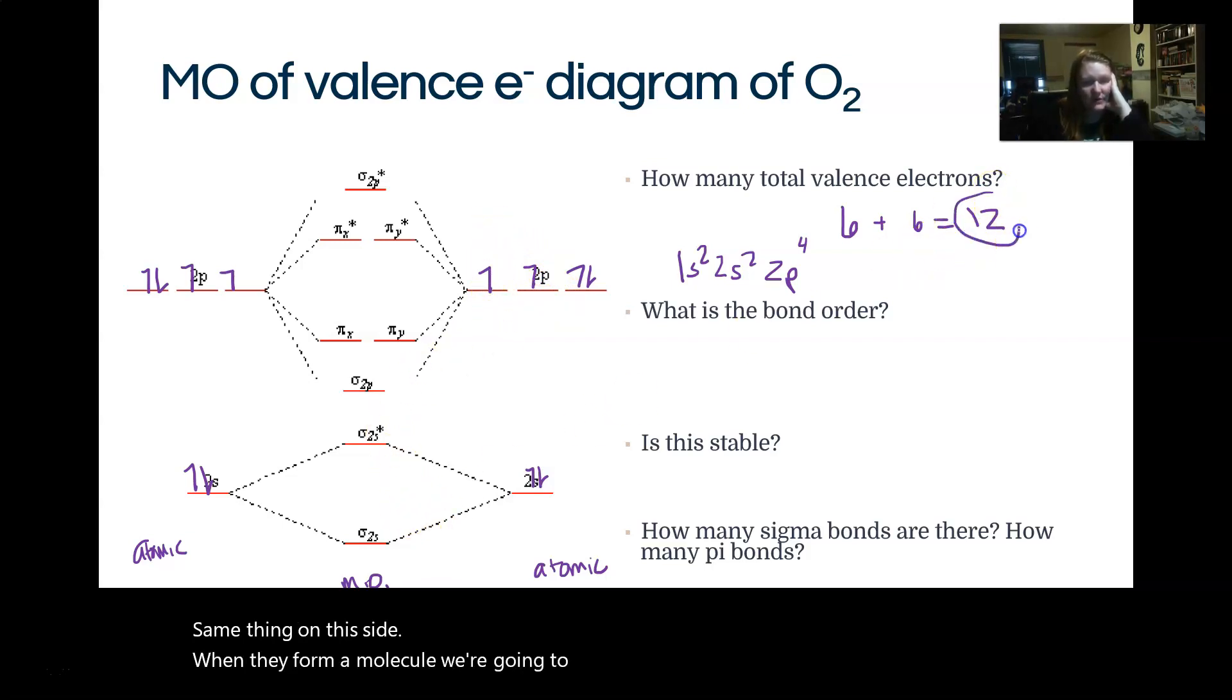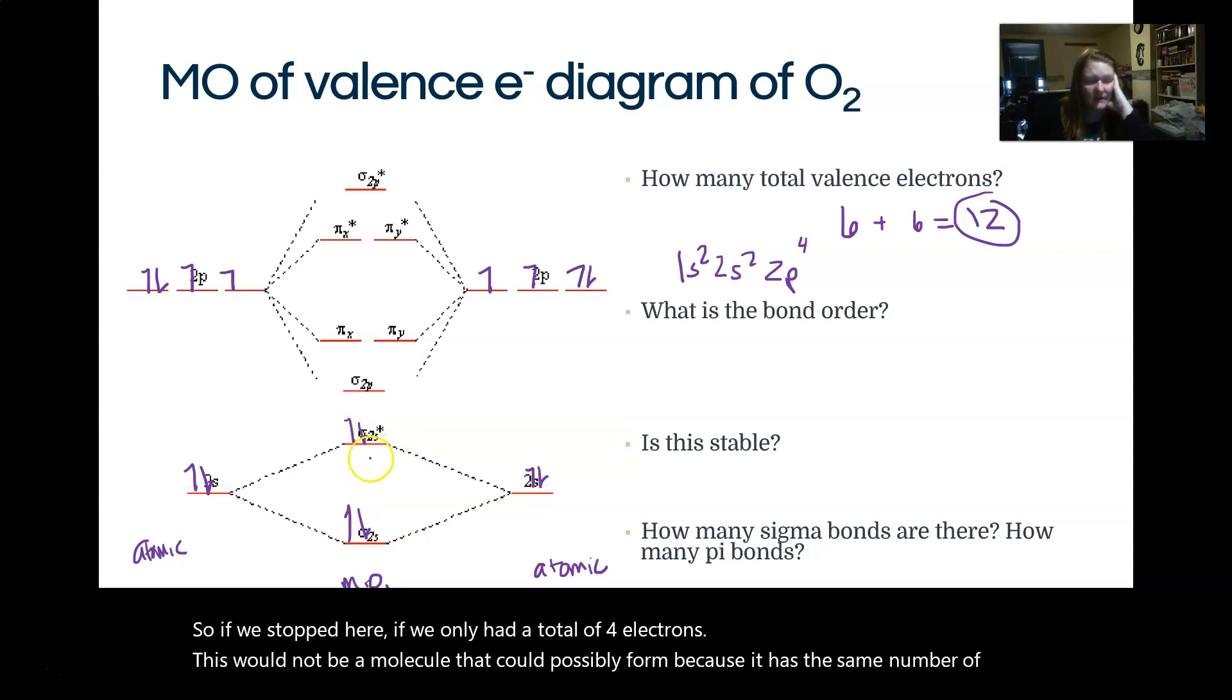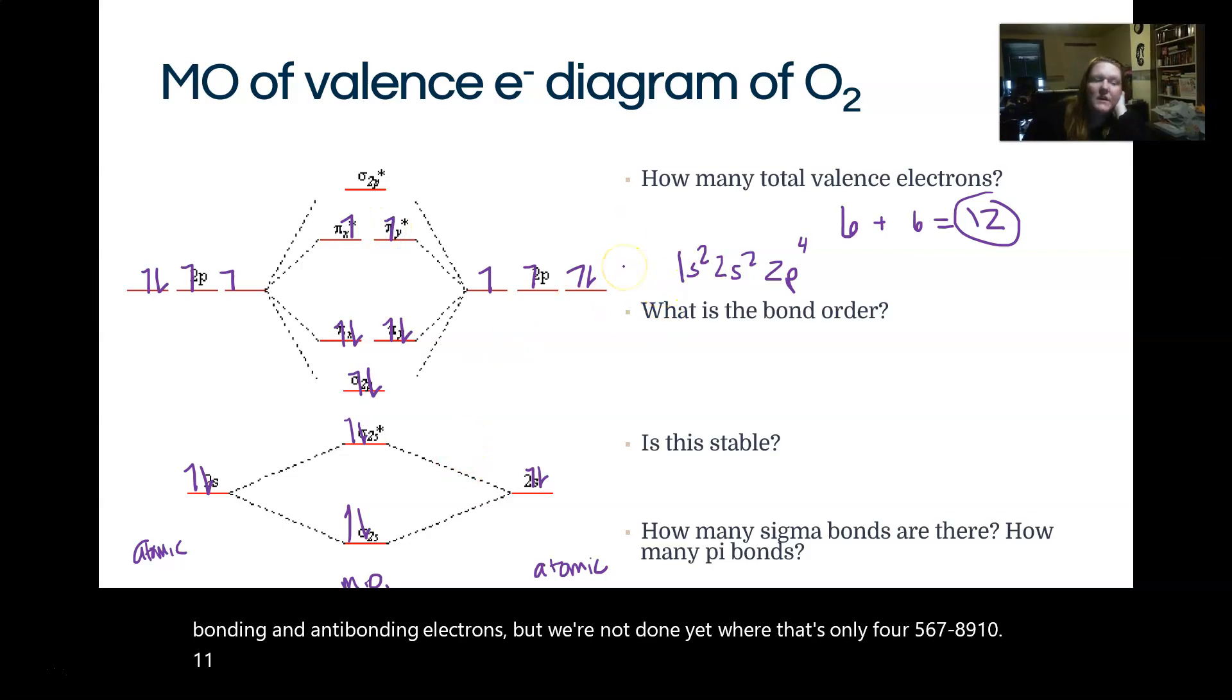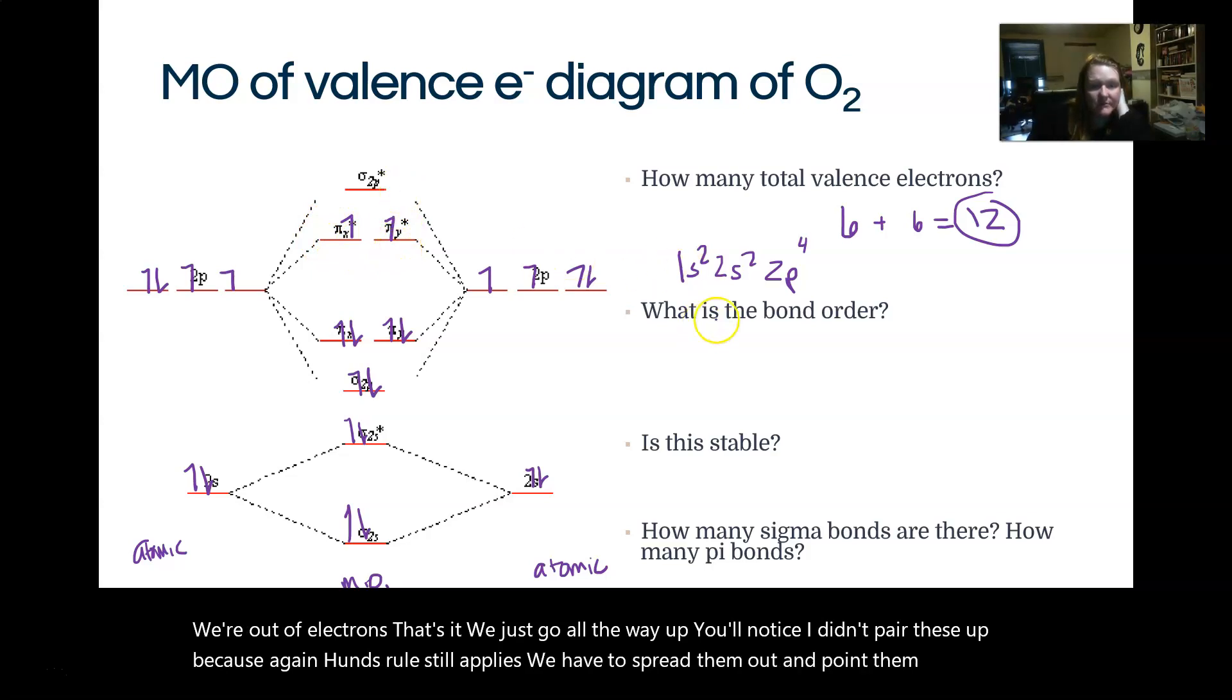When they form a molecule, we are going to fill up with all 12 of those electrons from the bottom, working our way up. So same principle here. Each line represents a box, and so we'll just fit 2 electrons on each line. So if we stopped here, if we only had a total of 4 electrons, this would not be a molecule that could possibly form because it has the same number of bonding and antibonding electrons. But we're not done yet. That's only 4. 5, 6, 7, 8, 9, 10, 11, 12. So we're out of electrons. That's it. We just go all the way up. You'll notice I didn't pair these up because Hund's rule still applies. We have to spread them out and point them in the same direction.